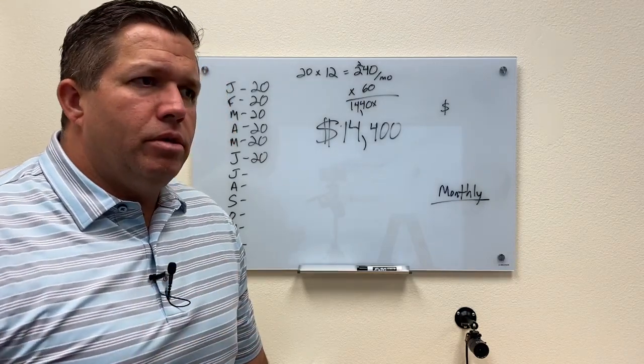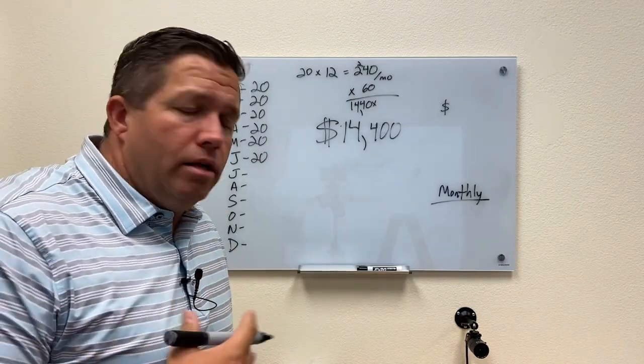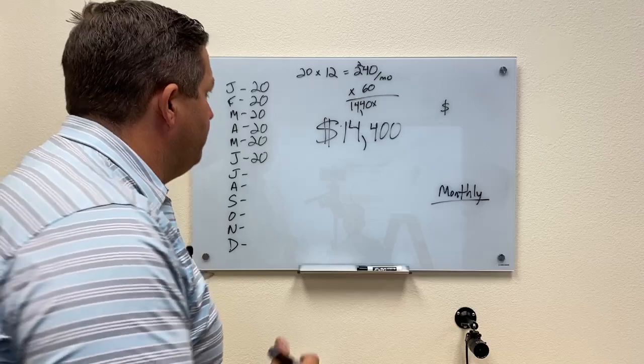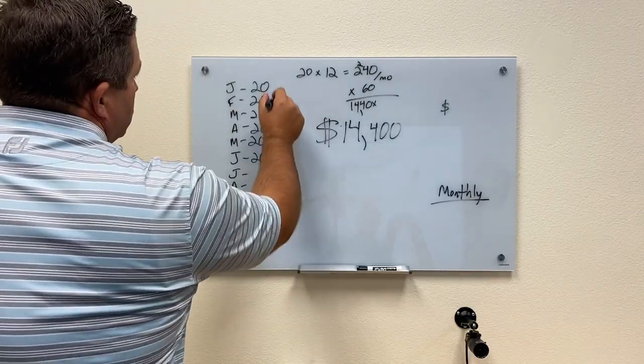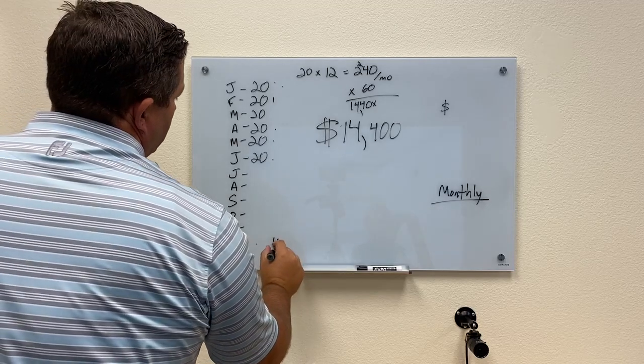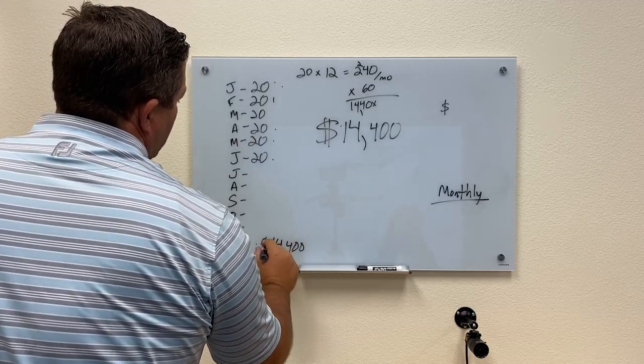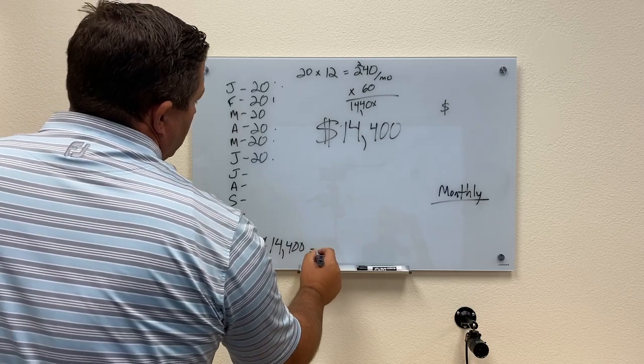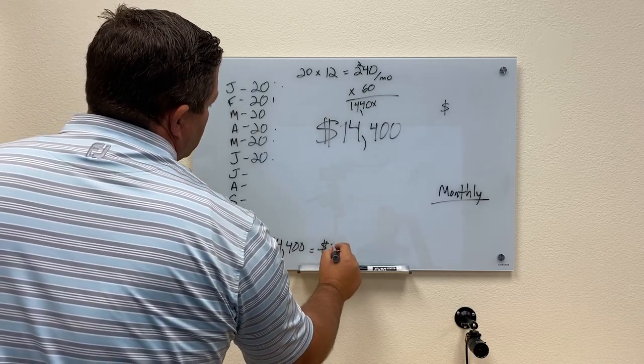So $14,400 a month in that active clinic stuff. Obviously every month you're going to get reactivations and other people, but let's just say this number holds true. So you're going to make this month and this month you're going to make $14,400.